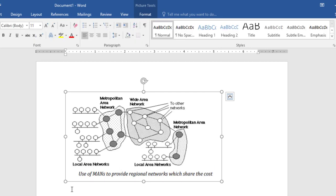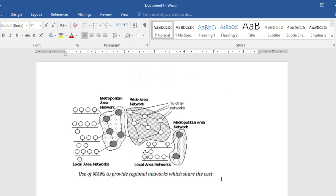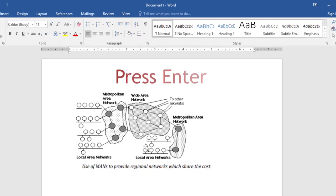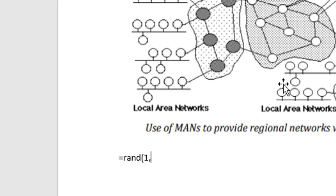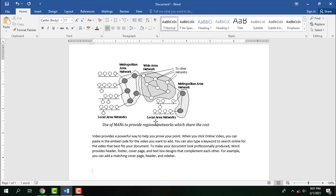If you want to type something just below the picture, click on the picture, press the End key from the keyboard, then press Enter and type something just below the picture. This is the first method of capturing the picture.